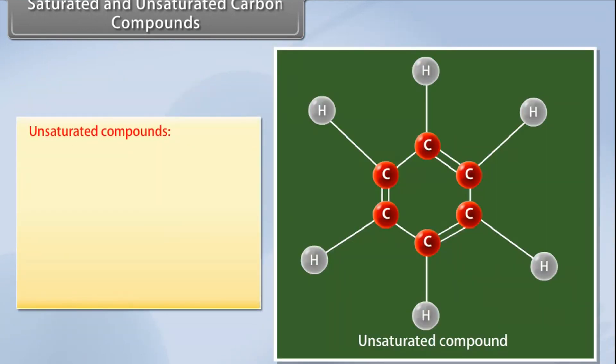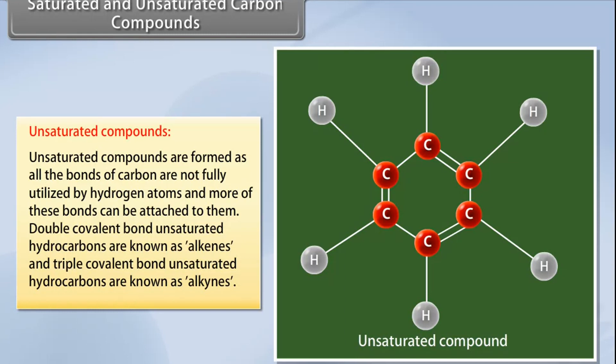Unsaturated compounds: Compounds of carbon and hydrogen that contain double or triple covalent bonds between the carbon atoms are called unsaturated hydrocarbons. These are formed as all the bonds of carbon are not fully utilized by hydrogen atoms, and more of these bonds can be attached to them. Double covalent bond unsaturated hydrocarbons are known as alkenes, and triple covalent bond unsaturated hydrocarbons are known as alkynes.